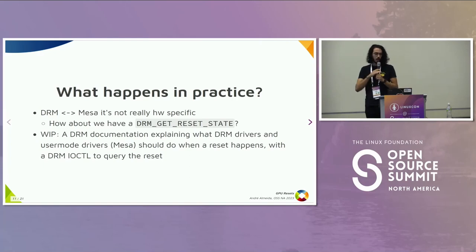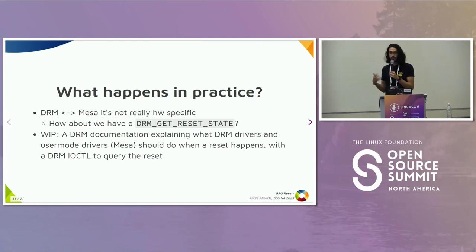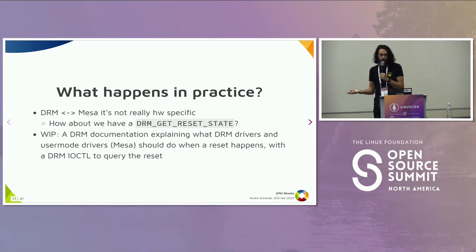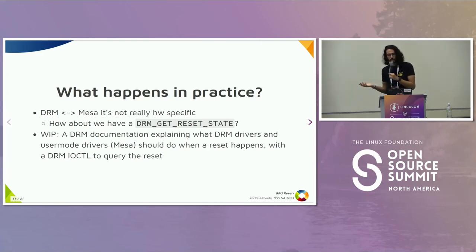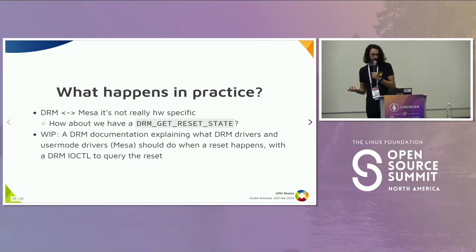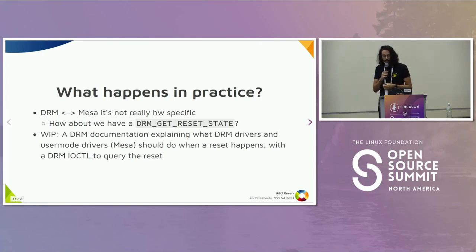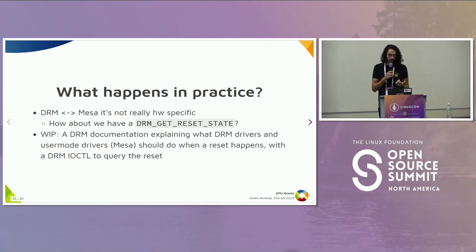On the Mesa side, we can probably put this in the common code, like in Gallium. So every time a GPU resets, the kernel knows what to say to Mesa and Mesa knows what to expect from the kernel, making the life of developers from both Mesa and kernel easier. I'm also working on documentation in the kernel to explain what the DRM drivers should do when a reset happens and what the Mesa drivers should do as well.